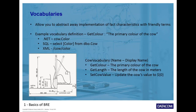So vocabularies — one of the key building blocks. What they allow you to do is abstract away the implementation of your fact characteristics with friendly terms. For example, if you're dealing with a .NET member, you'd have cow.color, but that doesn't read very nicely. So you could abstract it away with a vocabulary which has a display name of 'the primary color of the cow.' You could do the equivalent for SQL — effectively 'SELECT color FROM dbo.cow' — and abstract that away with the same display name.